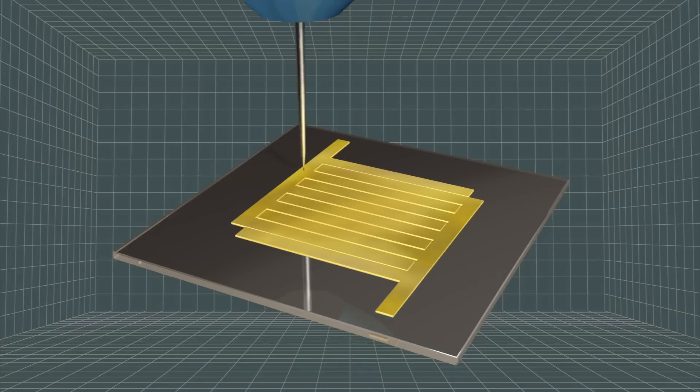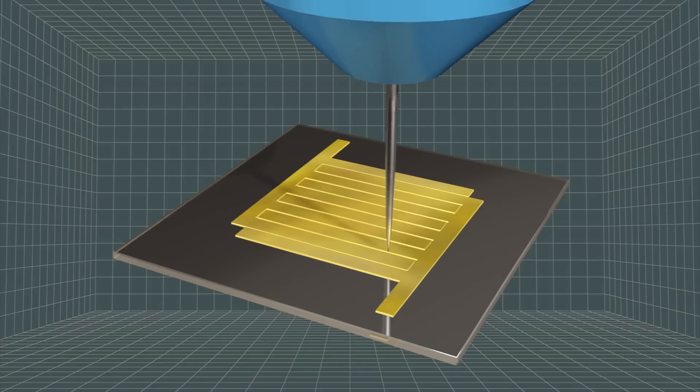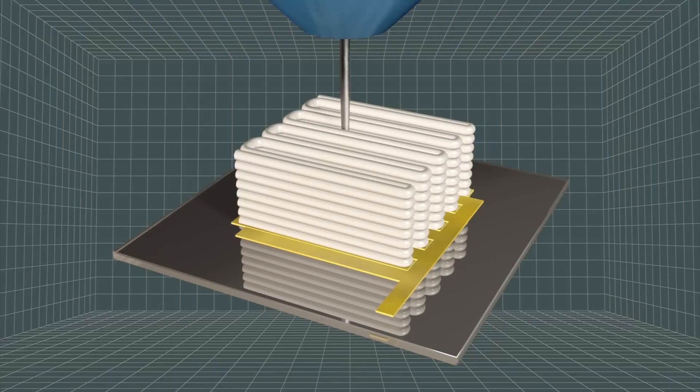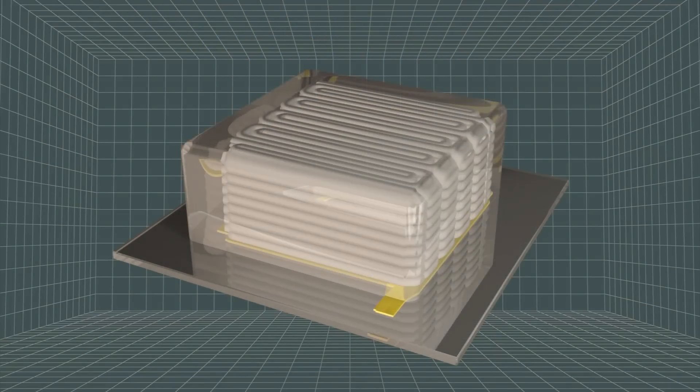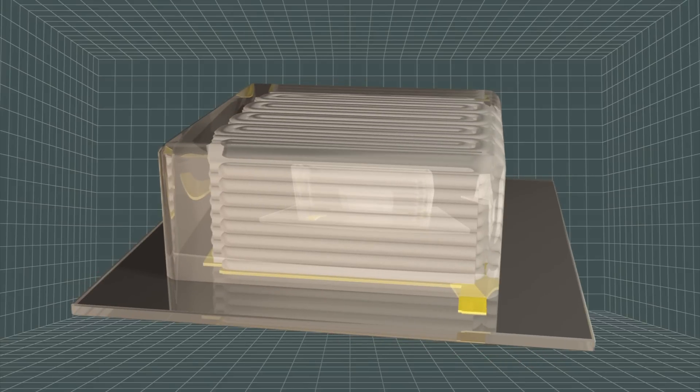The ink is printed on a glass substrate with a gold current collector, where it solidifies to create the battery's anode and cathode. A tiny container filled with an electrolyte solution encloses the electrodes to complete the battery.